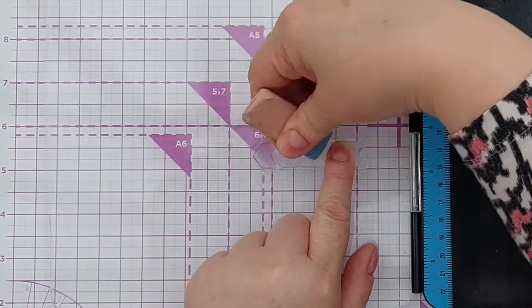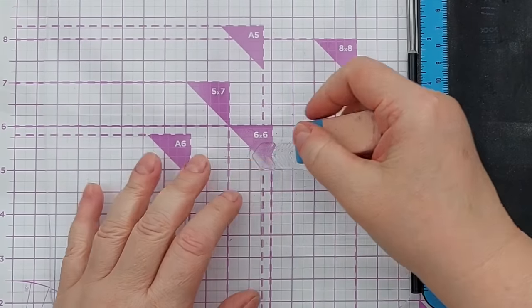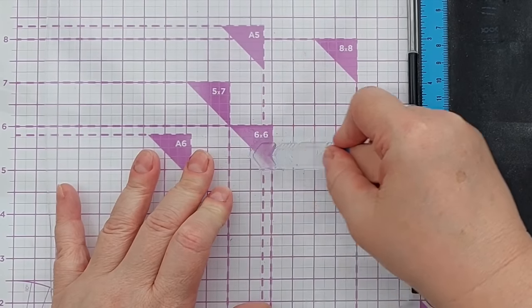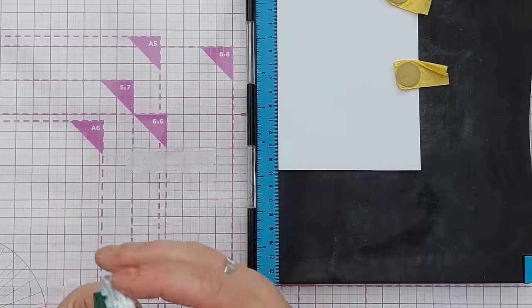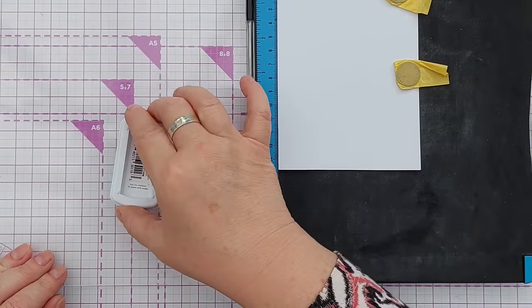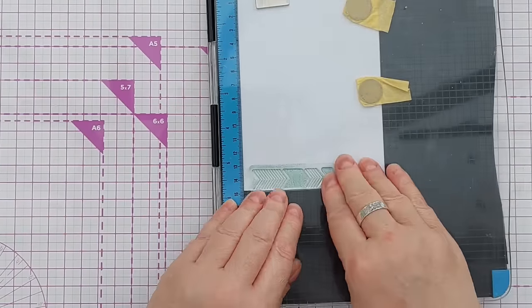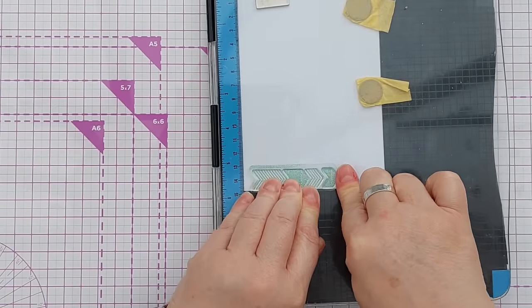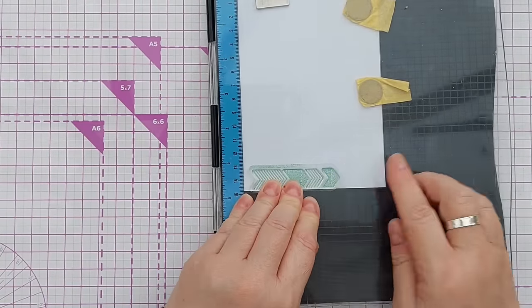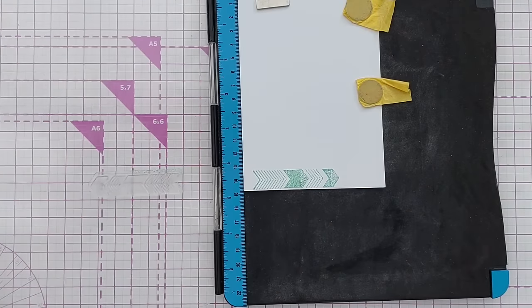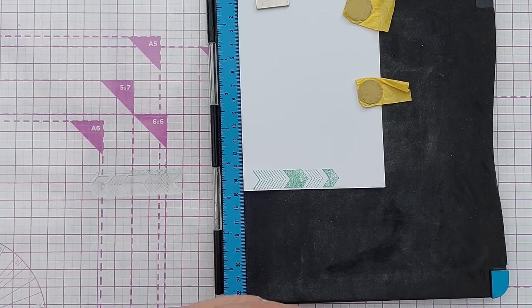I often find with photopolymer stamps you don't need to do this step but some silicon stamps seem to need it. So I'll ink this up with seafoam, press it down and give it a few seconds to transfer and I'm going to give it a second go.